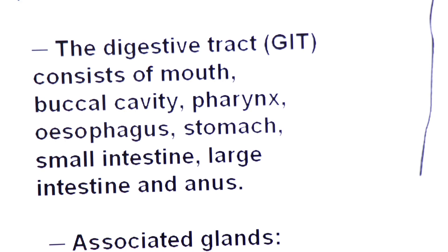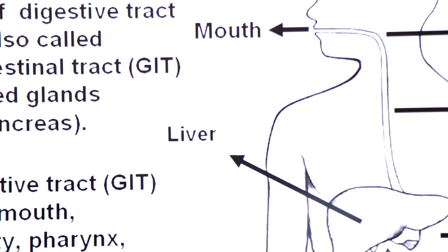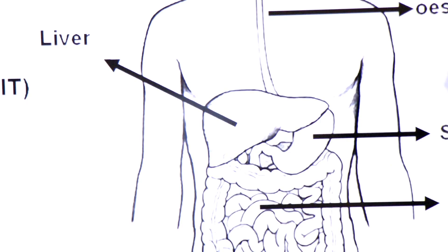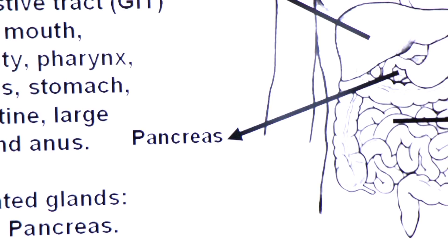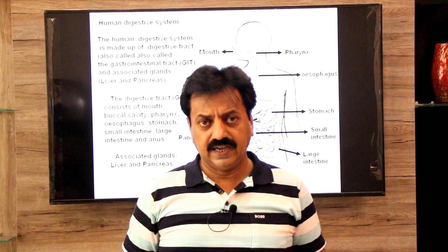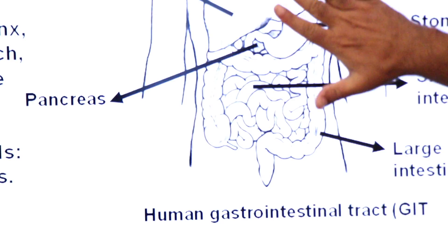The associated glands are the liver and pancreas. Here you can see the liver as an associated digestive gland. Near the loop of the duodenum — the first part of the small intestine — there is another gland known as the pancreas. So these are the two associated glands: liver and pancreas. This completes the first overview of the human digestive tract, the GIT.